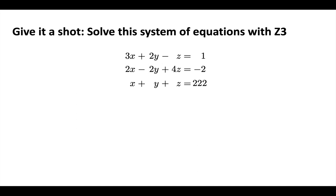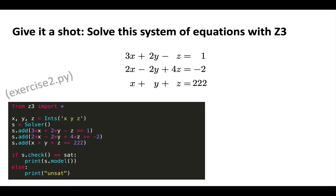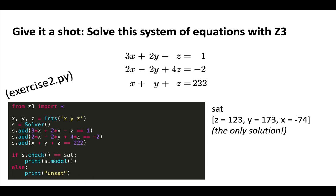Let's give this system of equations a shot. In exercise 2.py, we've defined three different constraints to solve this particular question. We have three integers X, Y, and Z, a solver state S, and we plug in our formulas as constraints into the solver. We check if it's satisfiable and if so, ask for a model. Z3 returns one specific model that satisfies all of this. In this case, the only solution is Z equals 123, Y equals 173, and X equals negative 74.